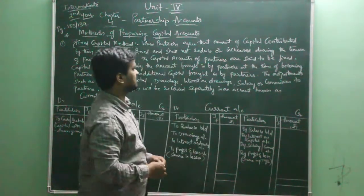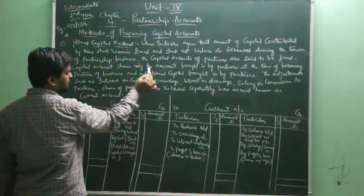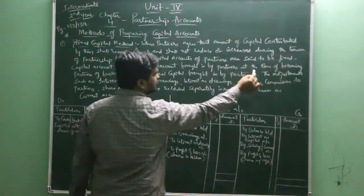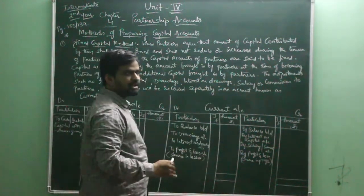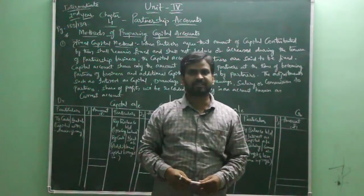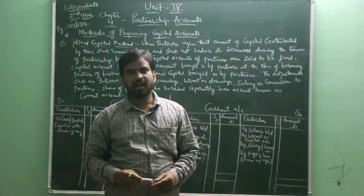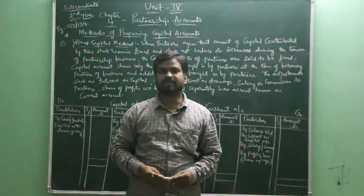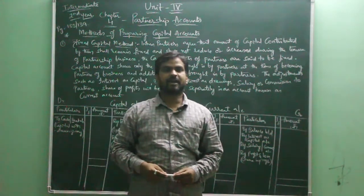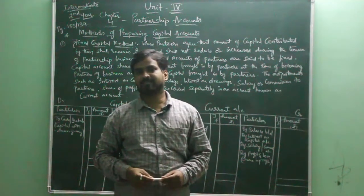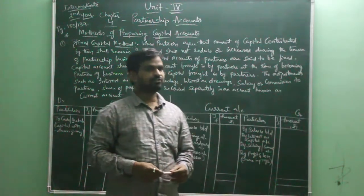This is what we call the fixed capital method. The capital account shows only the amount brought in by partners at the time of becoming partners of the business and any additional capital brought in by the partners. According to the fixed capital method, the capital balance reflects the amount which the partners have invested into the business and additional capital which they have introduced.